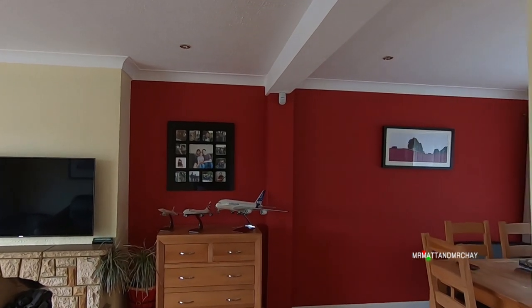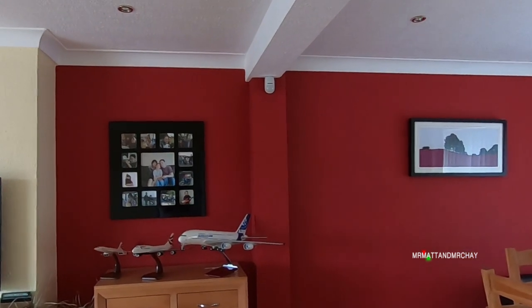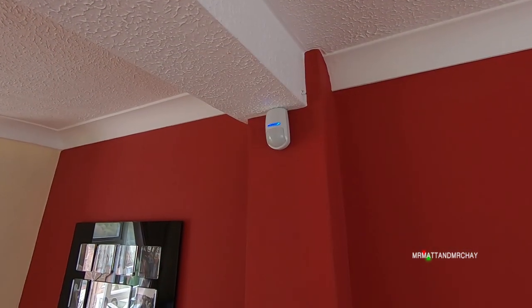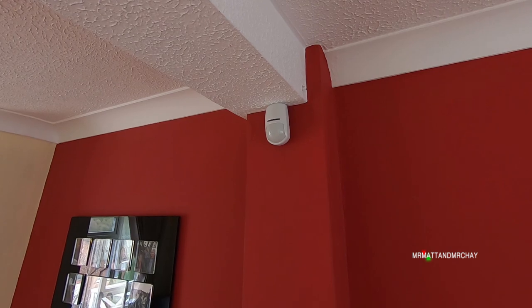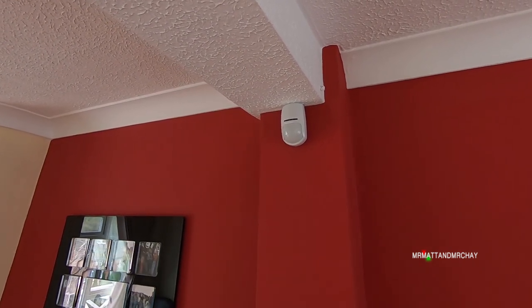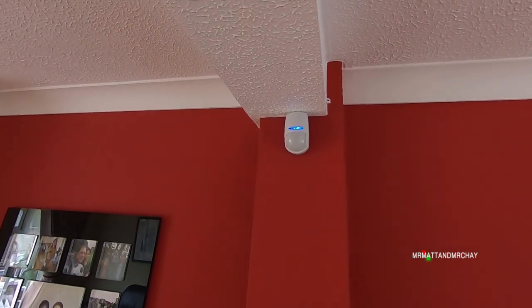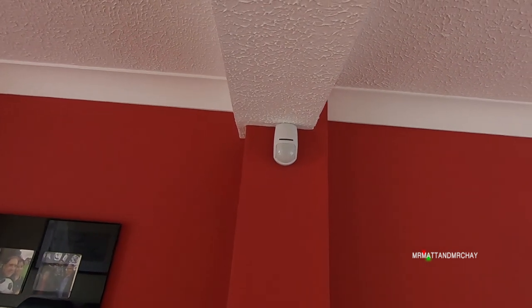So there we have it, the conventional PIR motion detector. It detects motion from rapid changes of radiated energy received from objects moving across the individual segments of the lens system.